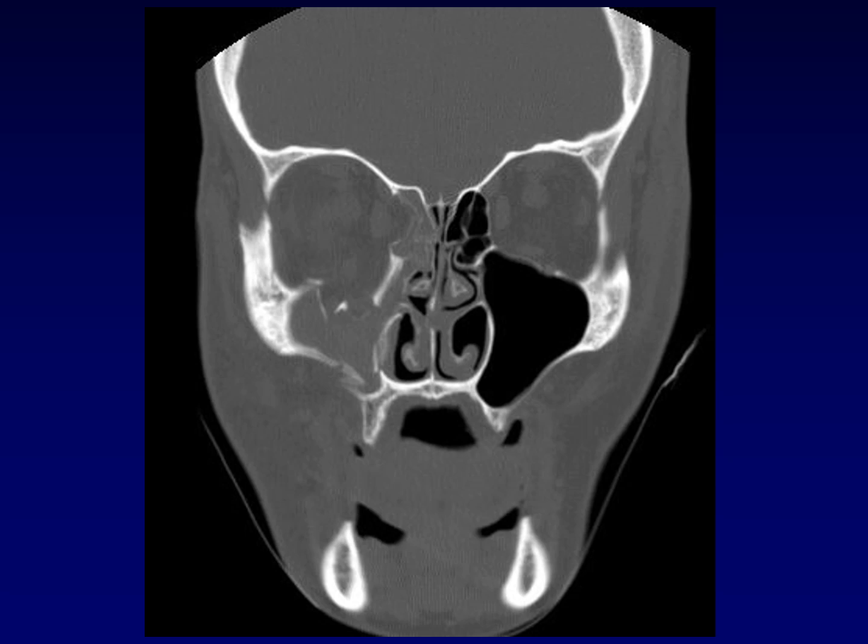Here's an example of blowout fractures in the right orbit. You can see that the normal contour of the orbital floor — which, judging from the other side, should be about here — has all fracture fragments displaced inferiorly, with orbital fat herniating through into the maxillary sinus. Interestingly, large fractures like this rarely result in entrapment; it is the smaller fractures that can entrap the extraocular muscles. Notice that the inferior rectus muscle has accompanied the herniated fat and is herniated in its own right.